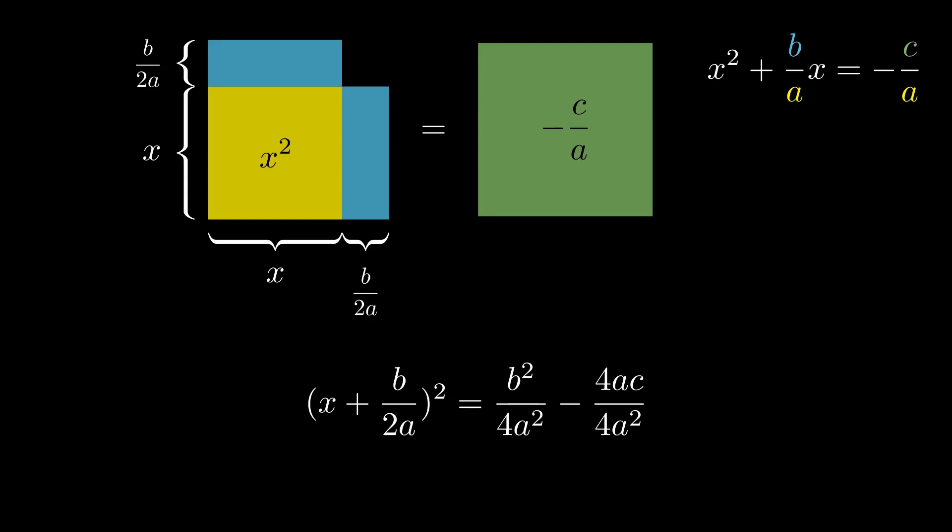Now, with the common denominator, we can add together the fractions on the right side and then take the square root on both sides. The square root of 4a squared is just equal to 2a. We'll now move over b over 2a to the right side and add together the fractions. This will give us the quadratic equation that you all are familiar with.